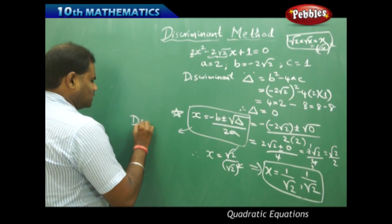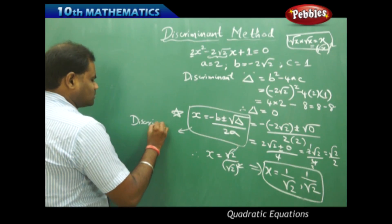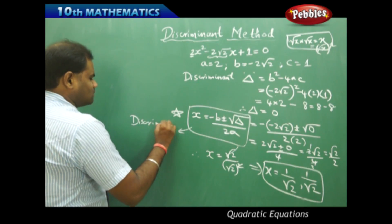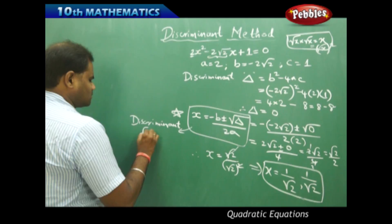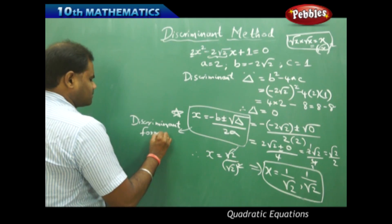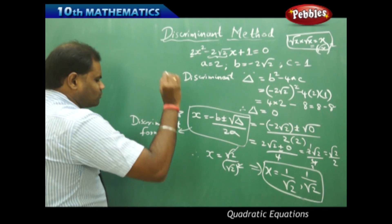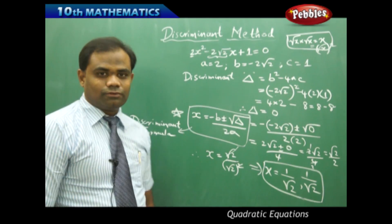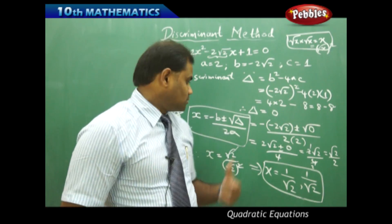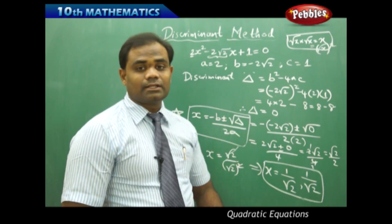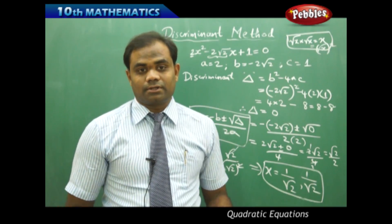This formula is called the discriminant formula for finding the roots of a quadratic equation using delta, the discriminant.